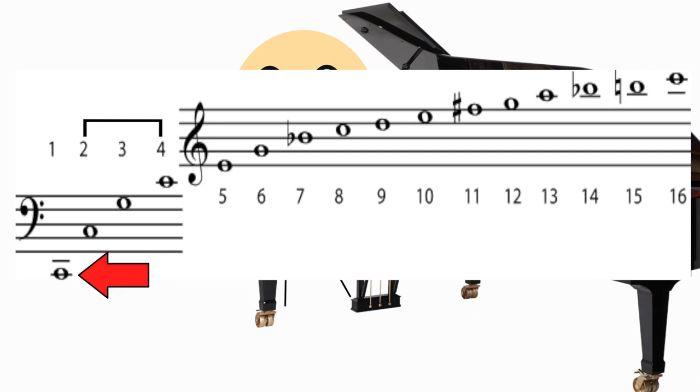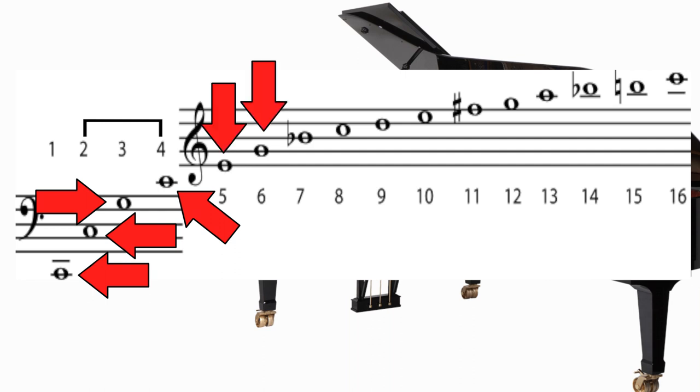The order of these partials is the fundamental pitch being the first, followed by an octave, then a fifth above that, then a fourth above that note, which is now three octaves above the fundamental, then a major third, minor third, major second, and so on in reducing intervals.